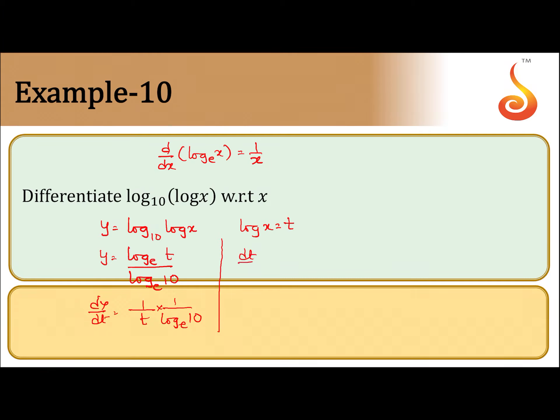So dt by dx is equal to 1 by x. Whenever different base is there you change into base e. So dy by dx is equal to dy by dt into dt by dx.